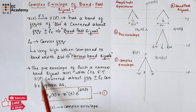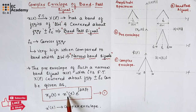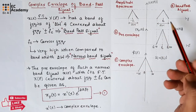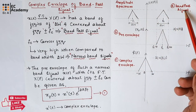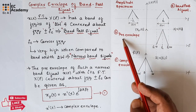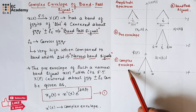The pre-envelope of such a narrow band signal X of T, with its Fourier transform X of F centered about the frequency plus or minus Fc, can be given as: X⁺(t) = X̃(t) · e^(j2πFct). Let us call this equation number 1. Here, X̃(t) is the complex envelope of the signal. This figure shows the amplitude spectrum of band pass signal X of T, amplitude spectrum of pre-envelope X⁺(t), and amplitude spectrum of complex envelope X̃(t).